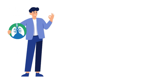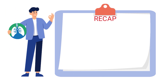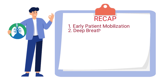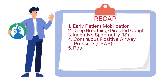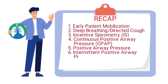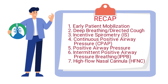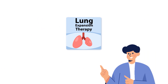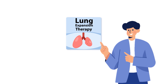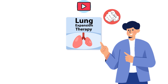To give a quick recap, the most effective types of lung expansion therapy include early patient mobilization, deep breathing and directed cough, incentive spirometry, CPAP, positive airway pressure therapy, IPPB, and the use of a high flow nasal cannula. Lung expansion therapy is a very important topic, which is why you must develop an understanding of the different types.